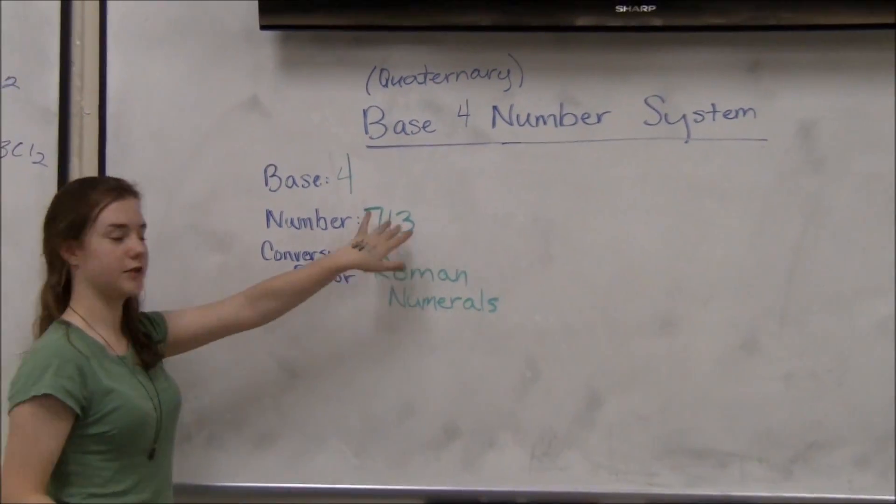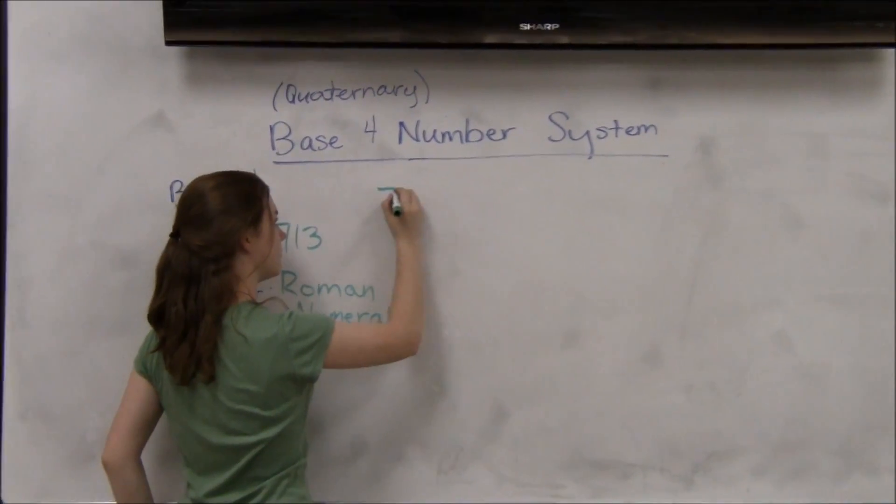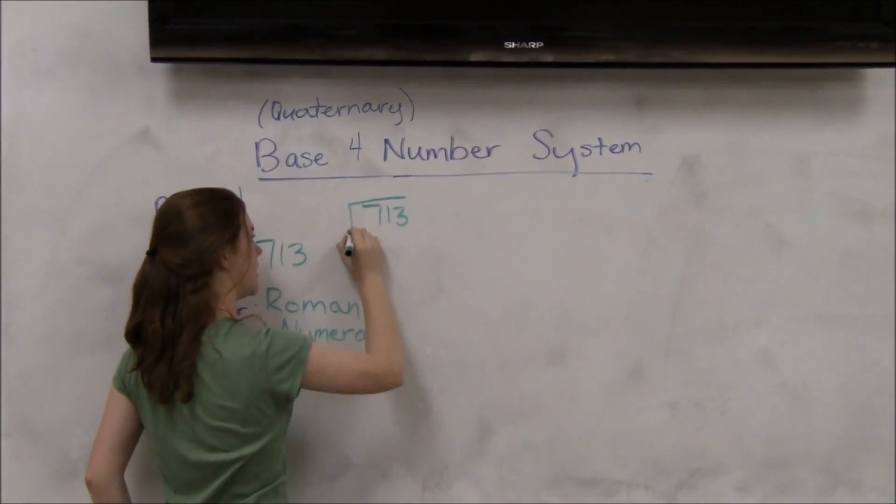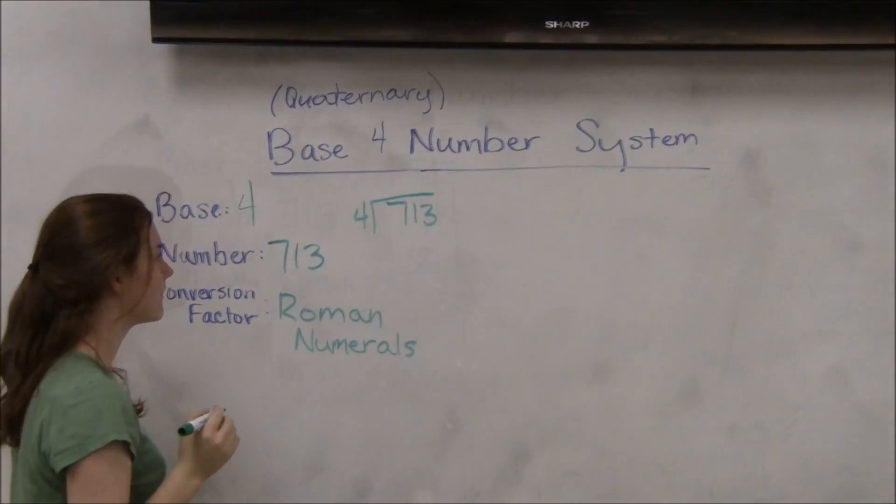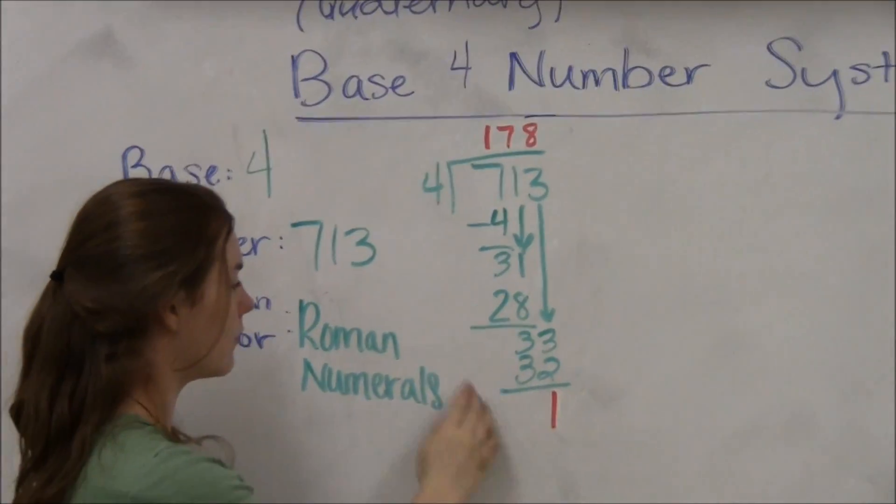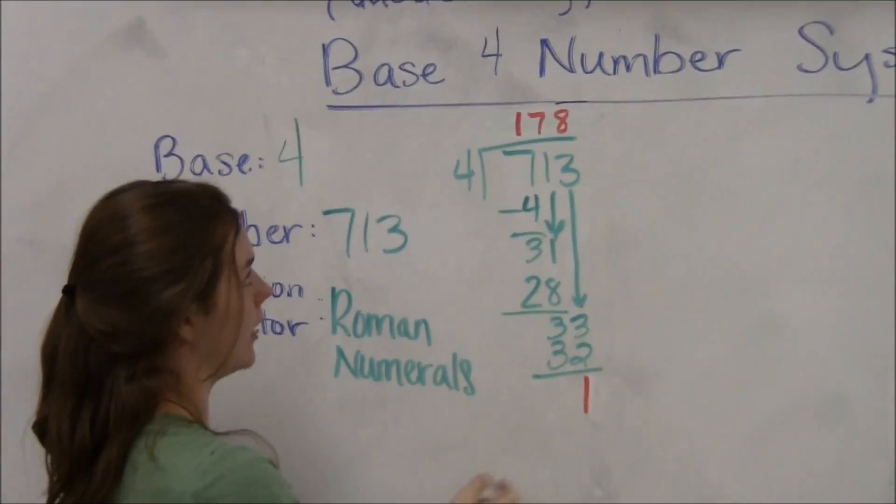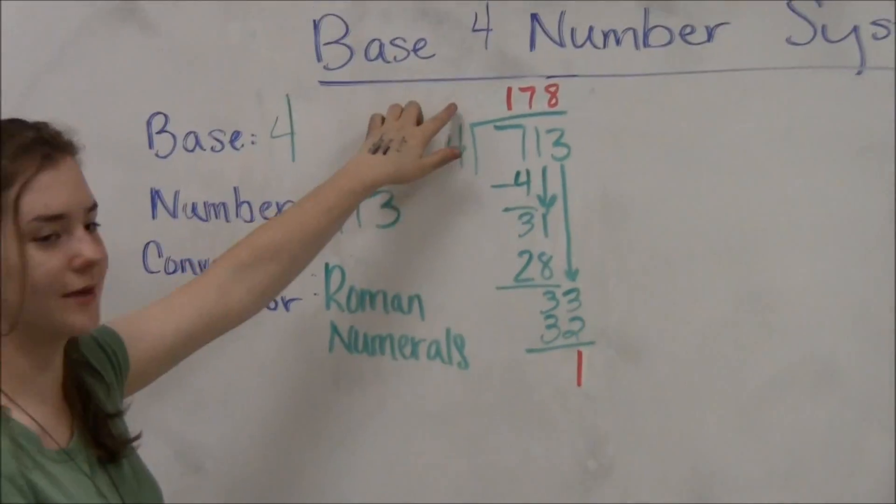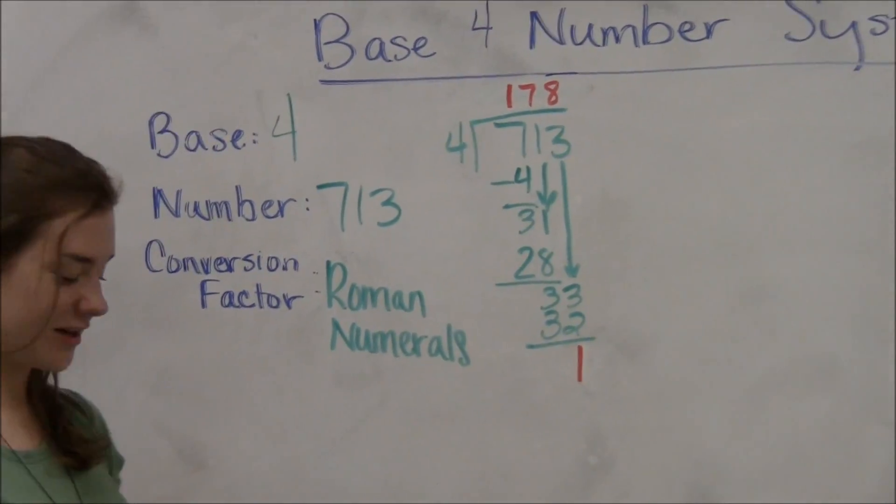To start the conversion, we'll take 713 and divide it by 4. So now that we did our first division problem, we have our remainder, which is 1, and our quotient number, which is 178.